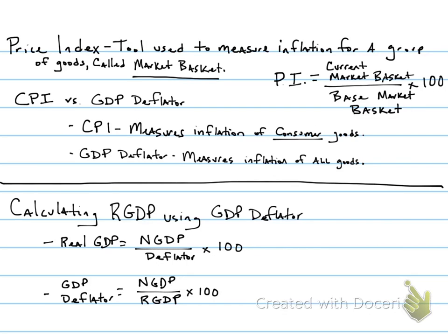So we're going to get started with talking about exactly what a price index is. A price index, by definition, is a tool that's used to measure the inflation rate for a group of goods. The group of goods that we are trying to measure, we call that the market basket. You can measure the inflation rate for any group that you want, but the group that you're measuring is referred to as the market basket for that specific price index.